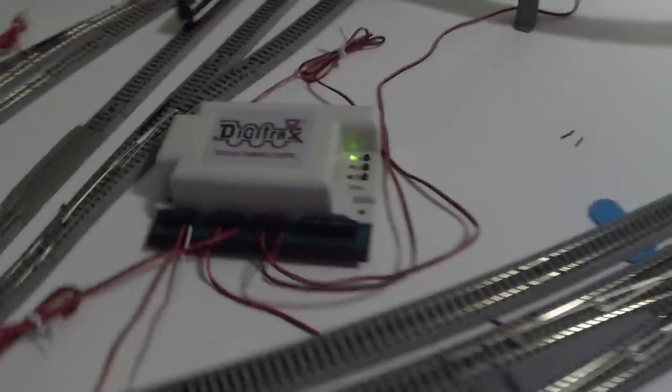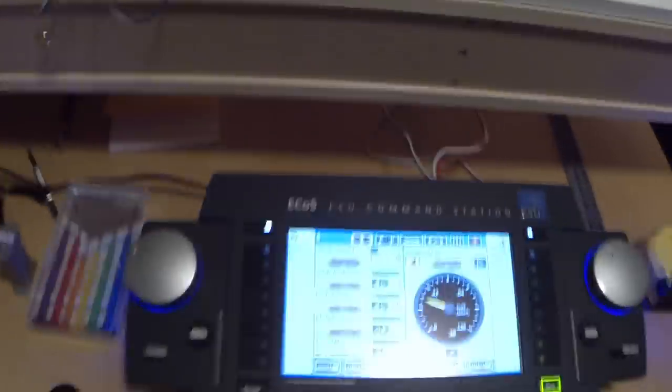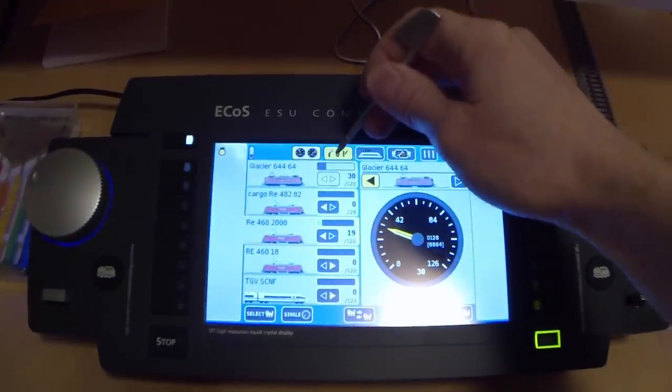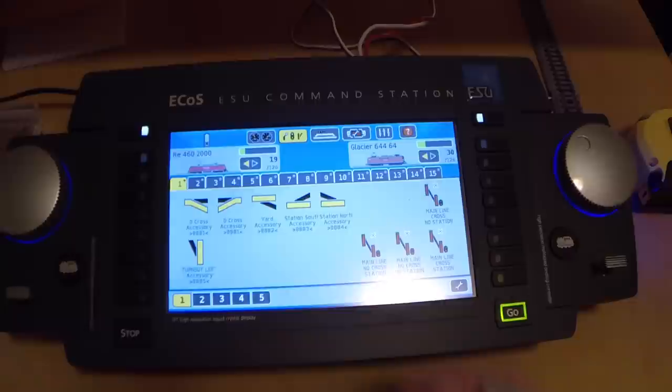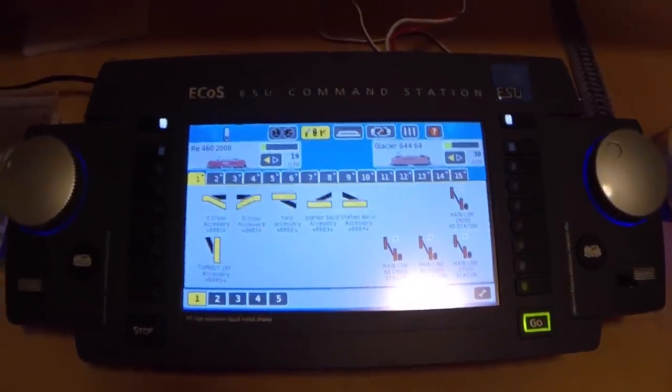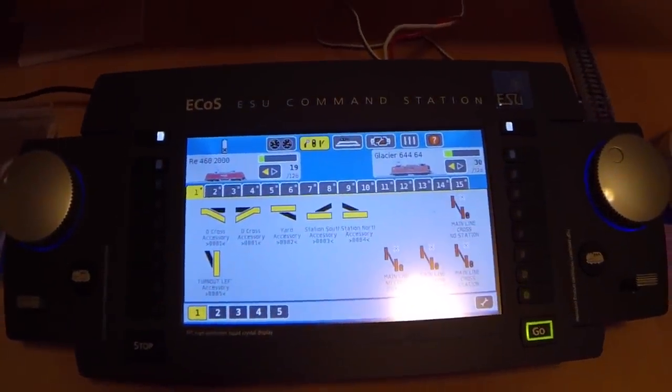Programming the DS64 is really simple. You basically come to your command station, go to your accessories area, and put in a new accessory program and address. Then, all you do is on the DS64, you press and hold down the ID button.